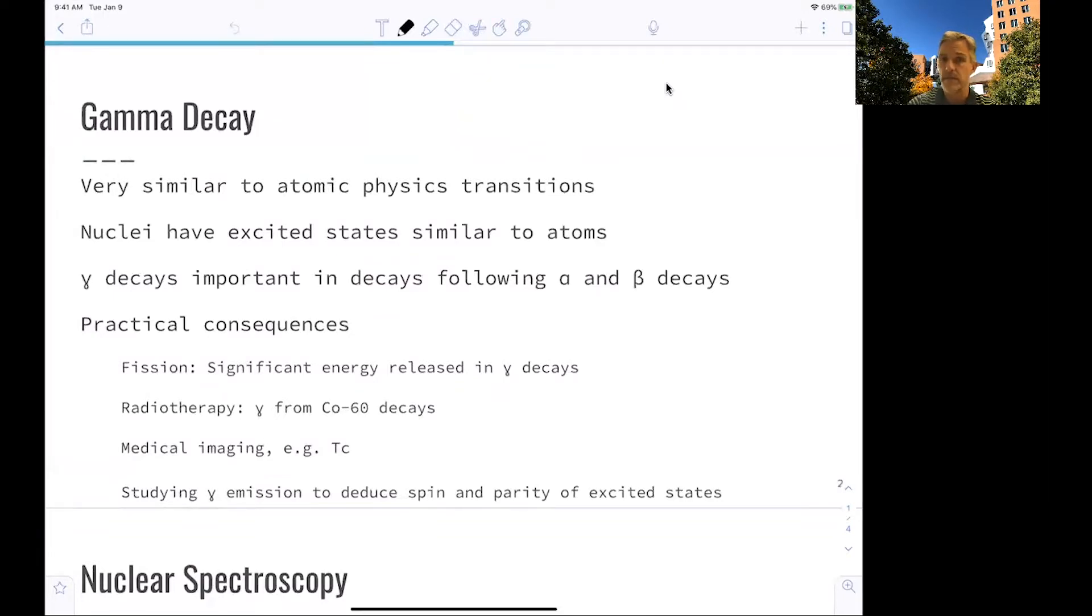Gamma decays are specifically important in decay chains following an alpha decay or beta decay, where the remnant, the daughter nuclei, is left over in an excited state. And then the de-excitation follows with the emission of a photon.